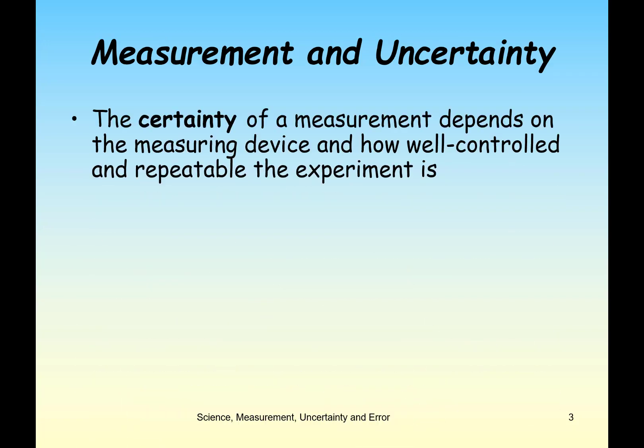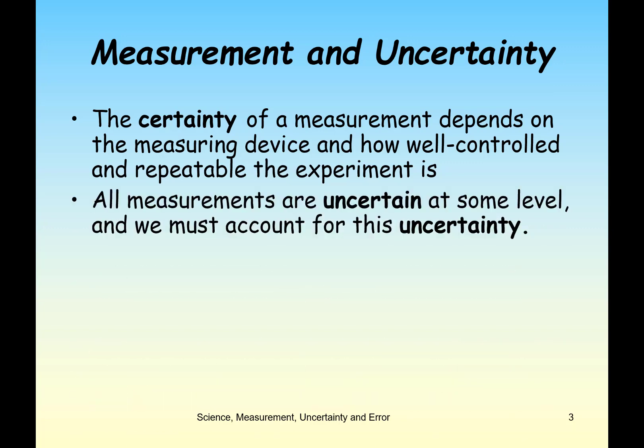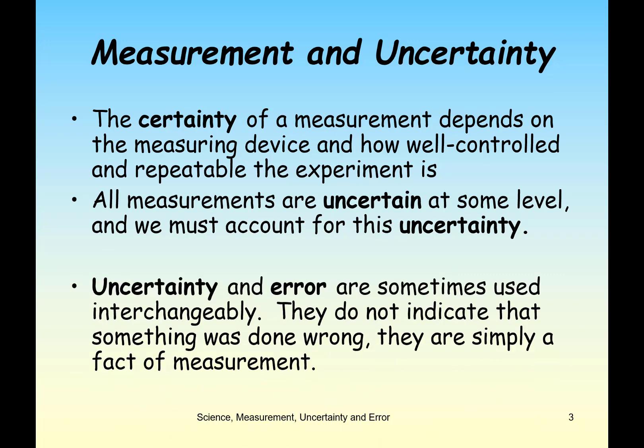The certainty of a measurement also depends on the measuring device and how well controlled and repeatable the experiment is. All measurements are uncertain at some level, and we have to account for this uncertainty. We can talk about both uncertainty and error — they're sometimes used interchangeably, but they're just a fact of life whenever we're doing science. They don't indicate necessarily that something was done incorrectly.